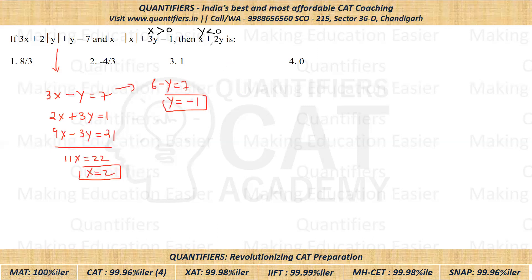What is the value of X plus two Y? So X plus two Y is two plus two into minus one, that is negative two. So the answer is coming out to be zero, which is option number four. I hope this is clear to everyone. Thank you, everyone.